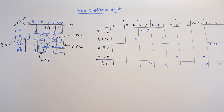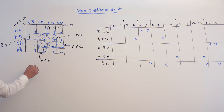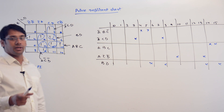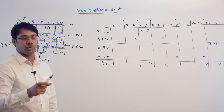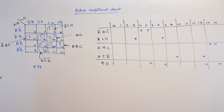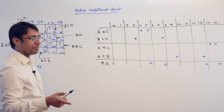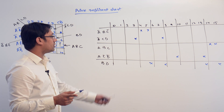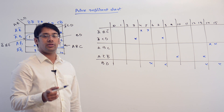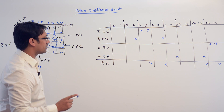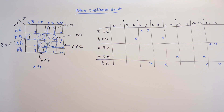Let us identify what are the essential prime implicants. The essential prime implicants are the implicants which cover a term that is not covered by anyone else. In a minimized solution equation, all the essential prime implicants should be there. If you miss out any essential prime implicant, then the solution is not representing the equivalent logical function.